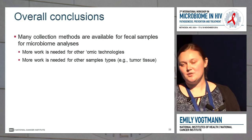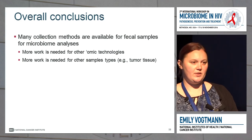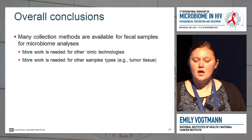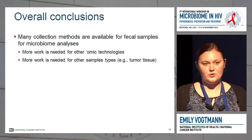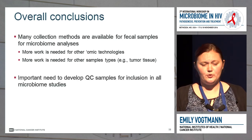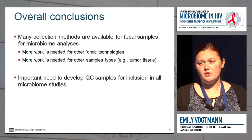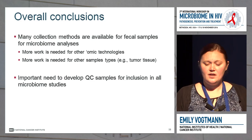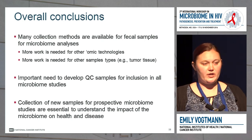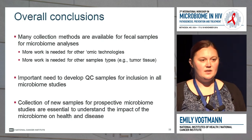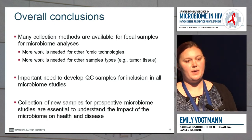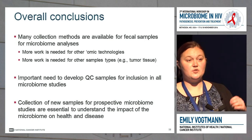In conclusion, there are many collection methods available for fecal samples, but more work is needed for other omic technologies — whole genome shotgun metagenomics, proteomics, et cetera — and for different sample types depending on your hypothesis. It's also really important to develop QC samples for inclusion in these studies, and hopefully in the future we can use these QCs to help combine and pool data. Finally, it's really important to collect new samples for prospective microbiome studies to look at the impact of the microbiome on health and disease, since case-control studies can't tell if it's the microbiome actually impacting the disease or if the microbiome changed due to the disease.